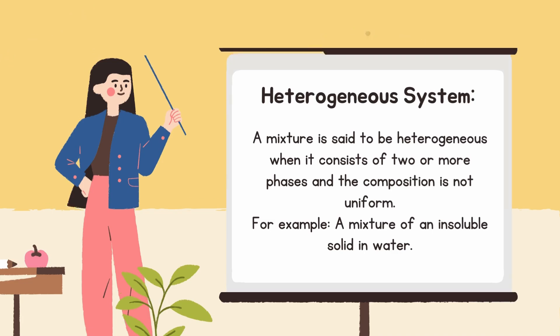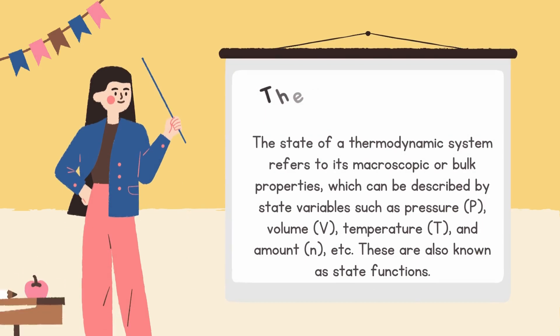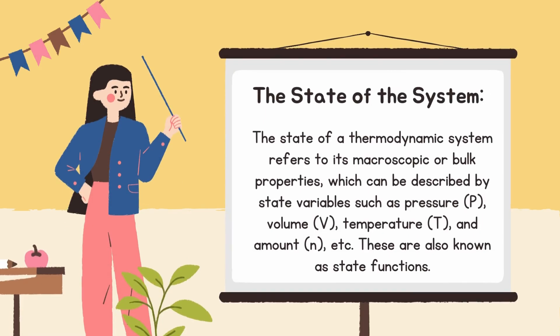Moving to the state of the system: the state of a thermodynamic system refers to its macroscopic or bulk properties, which can be described by state variables such as pressure (P), volume (V), temperature (T), and amount (N), etc. These are also known as state functions.